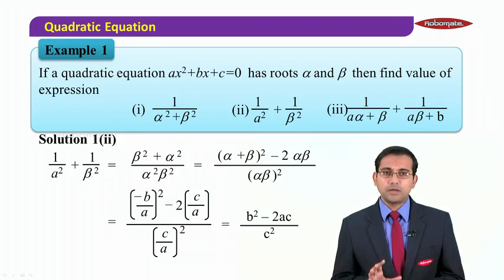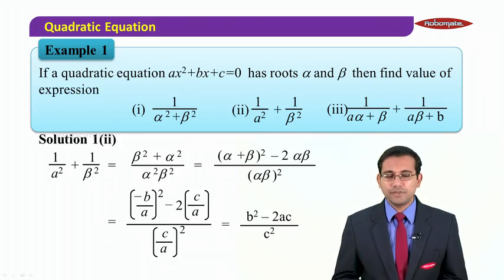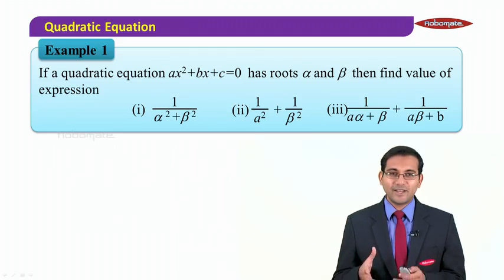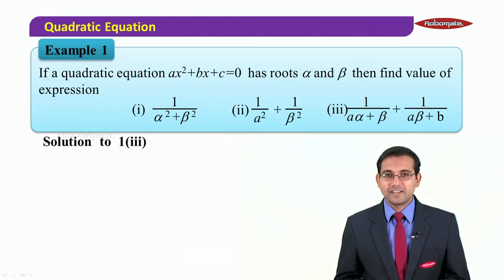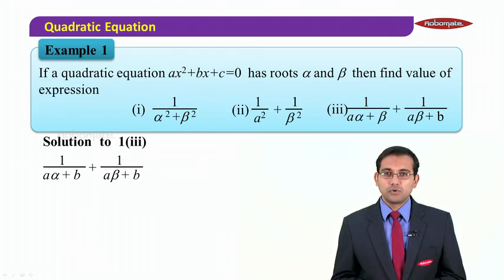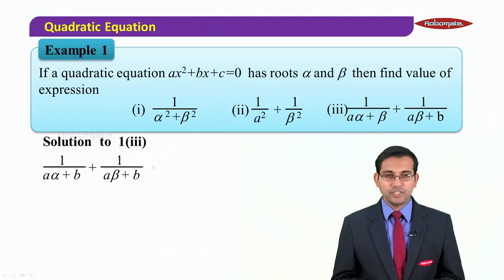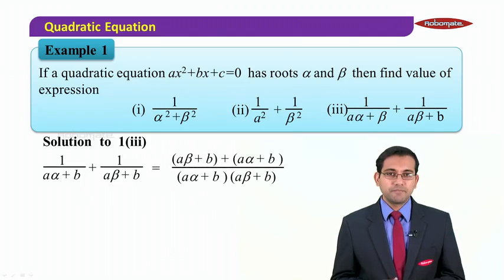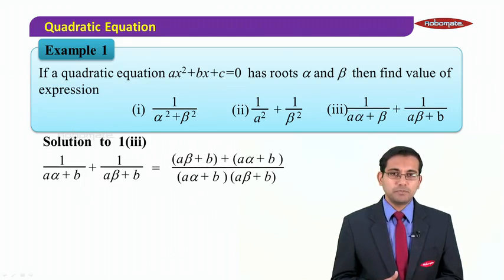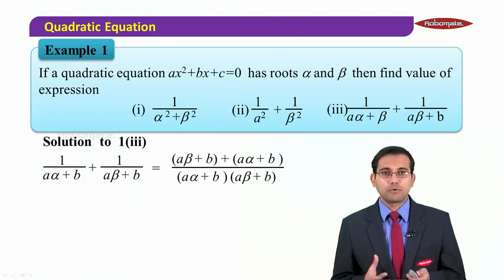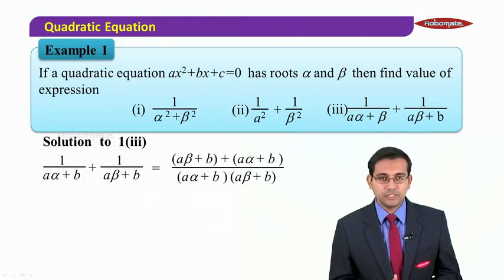Now the third expression looks a bit complicated, but it is easy. Taking the LCM of 1/(aα + b) + 1/(aβ + b) by cross-multiplying, we get (aβ + b) + (aα + b) in the numerator, over the product of the two denominators.